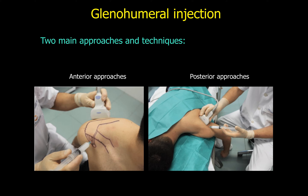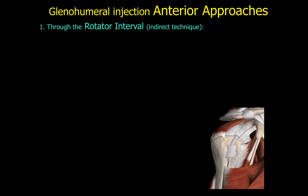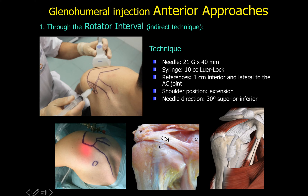For glenohumeral joint injections, there are two main approaches: anterior and posterior. The most commonly used anterior approach targets the rotator interval — the space between the anterior border of the supraspinatus and the superior border of the subscapularis. The main problem with ultrasound-guided anterior approaches is that the needle is almost perpendicular to the joint, making it difficult to visualize clearly.